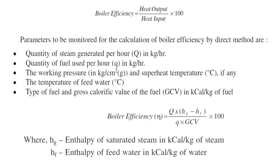In this method, boiler efficiency equals Q × (Hg − Hf) × 100 divided by Q × GCV, where Hg is the enthalpy of saturated steam in kcal/kg of steam, and Hf is the enthalpy of feed water in kcal/kg.